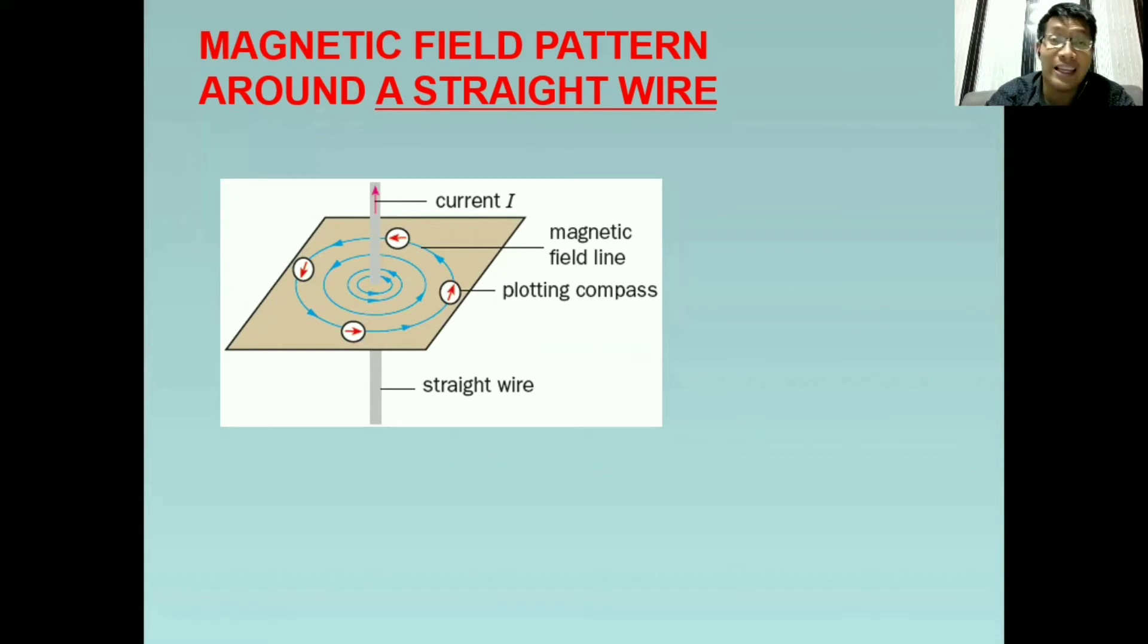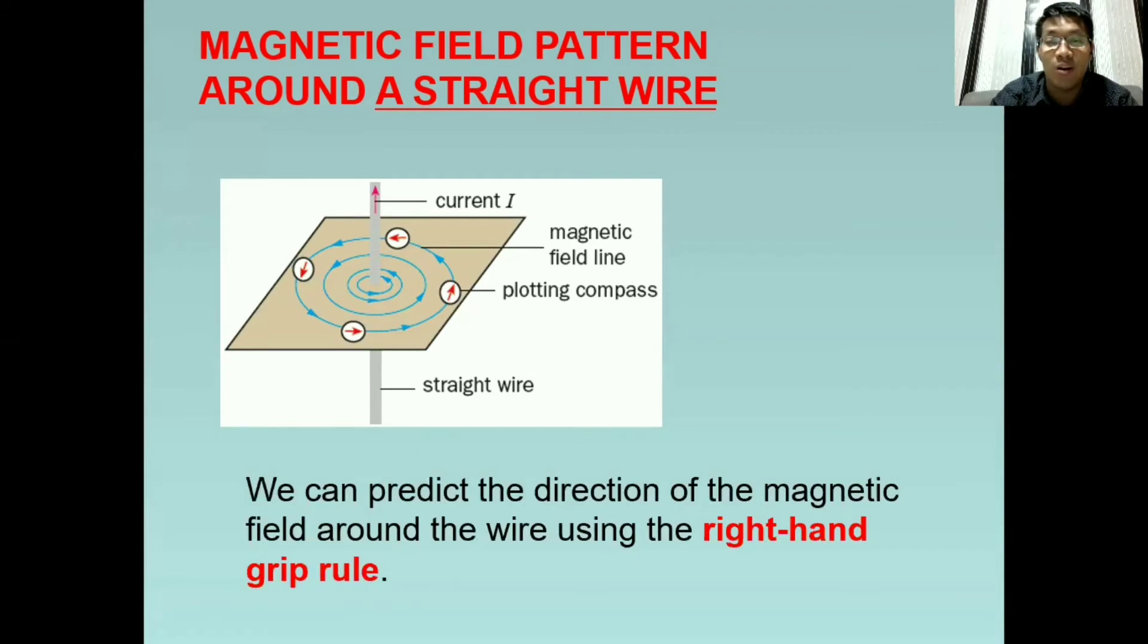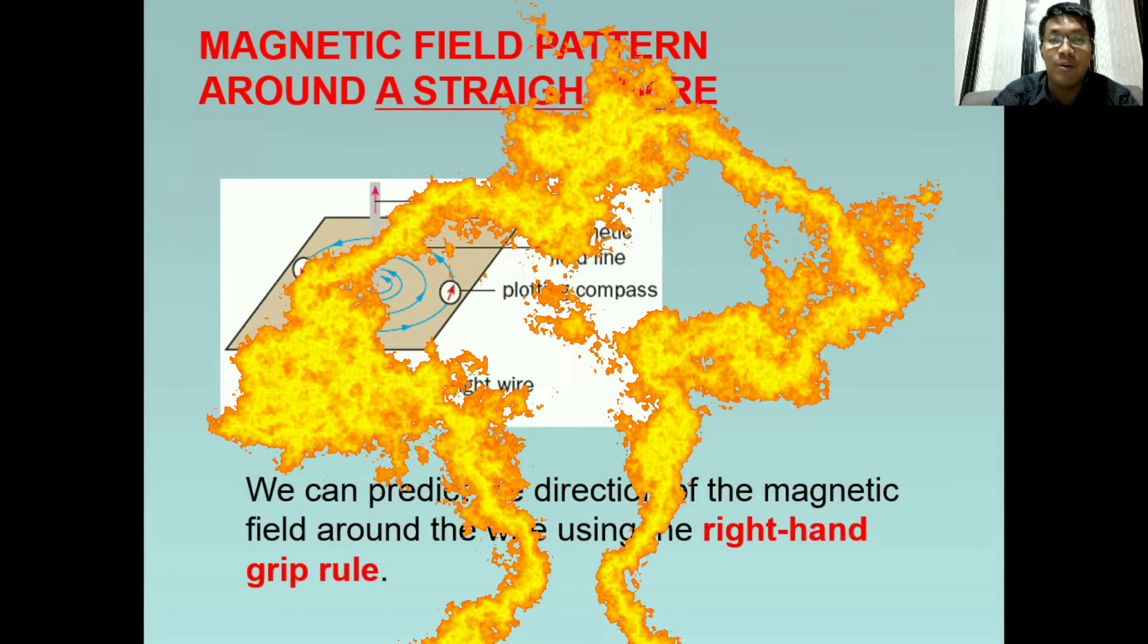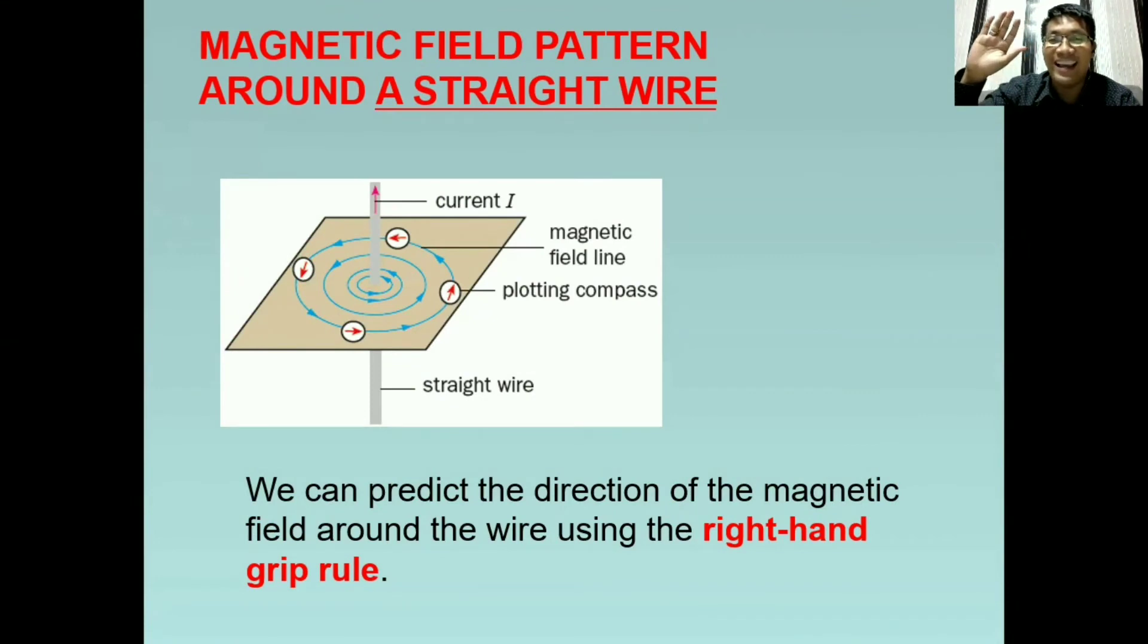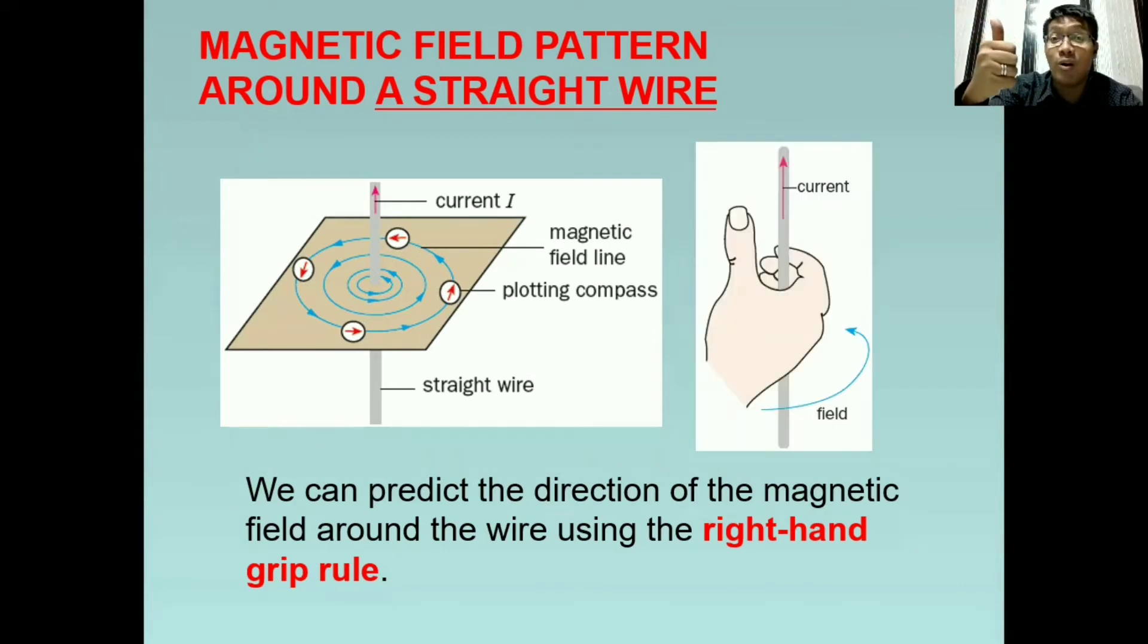So how can we predict the direction of the magnetic field in this scenario or in a straight wire? Eh sir, bakit kailangan natin malaman ang direction? Dahil pag inaralan natin ang electric motor, mahalagang alam natin kung anong direction ng magnetic field upang malaman din natin kung paano nagpo-function o anong magiging movement ng electric motor natin. And for this case, we're going to use the so-called right hand grip rule. Itaas ang kanang kamay at gawin ito. Parang naka-thumbs up.